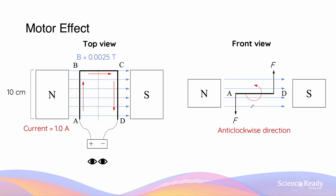From the front view, the force acting on side AB will be acting downwards, and the force acting on side CD will be acting upwards. These two forces will generate torque.